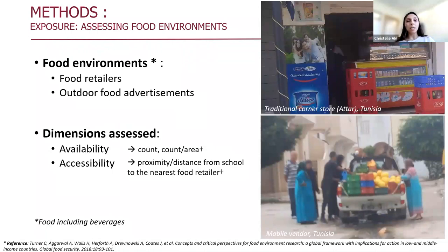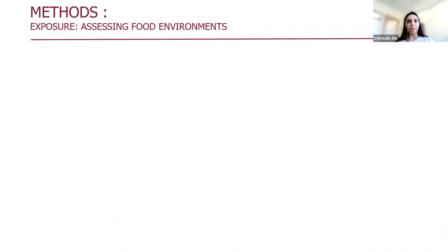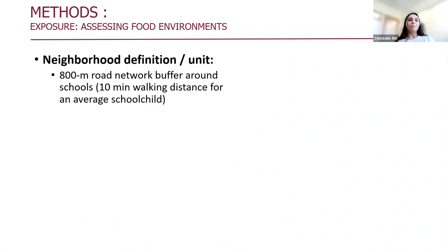We used this matrix because this is how availability and accessibility are usually measured and operationalized in the food environment literature, in line with the conceptual framework developed by Technologa. For defining neighborhoods, we opted for an 800-meter road network buffer around schools, because this is equivalent to a 10-minute walking distance for an average school child, which is a logical walking duration for children.